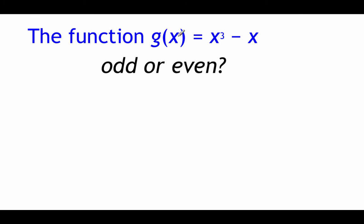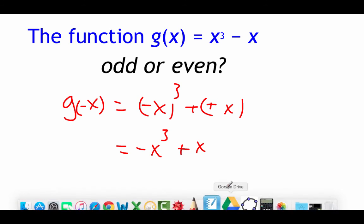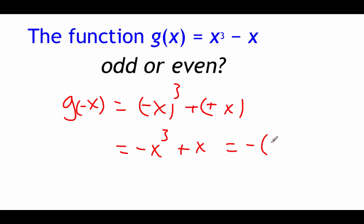Last example, we're looking at function g of x being x cubed minus x. So again, plug in that negative x, so g of negative x. So we get negative x cubed minus negative x. Well, cubing a negative keeps it negative, so that's negative x cubed. Double negative here becomes a plus x. We can factor out a negative from here, which is the opposite of our original function g of x, so this function is odd.